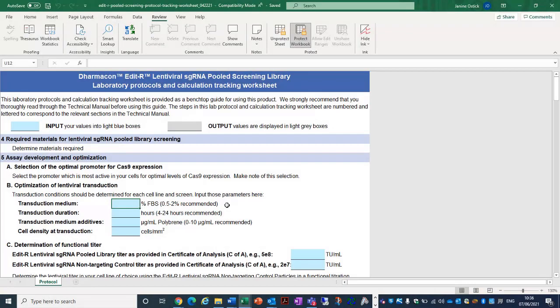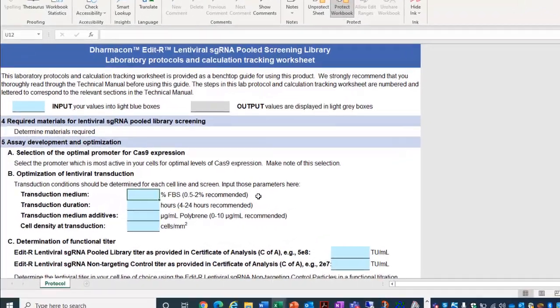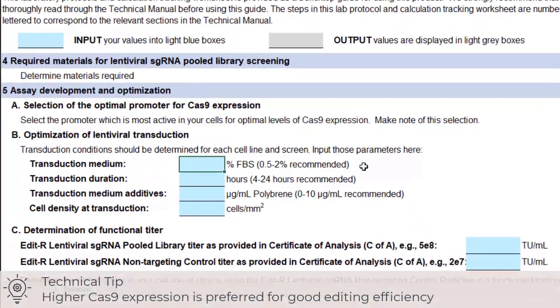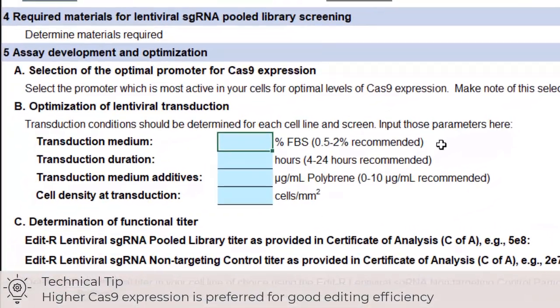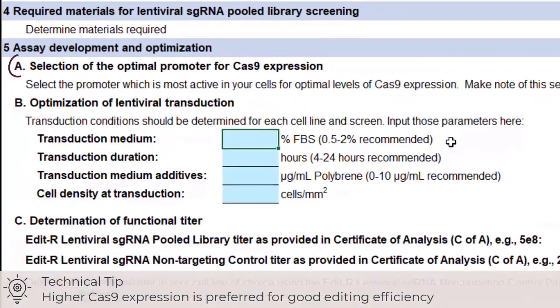The first step is to determine the optimal promoter for Cas9 expression in your cell type. It's important to do this because Cas9 expression levels have a significant effect on gene knockout efficiency.